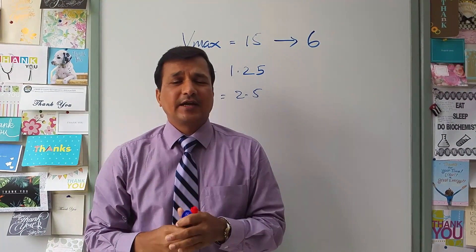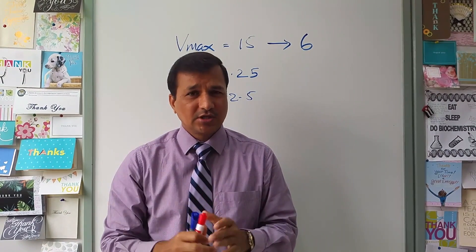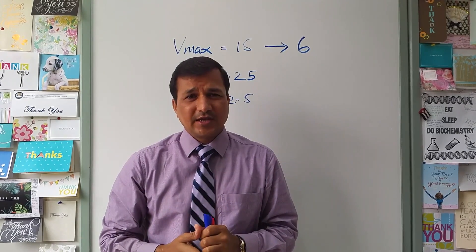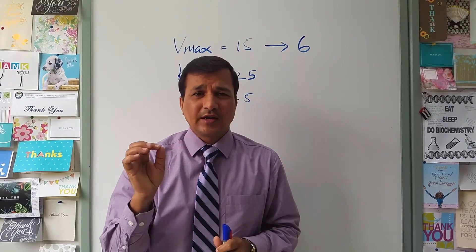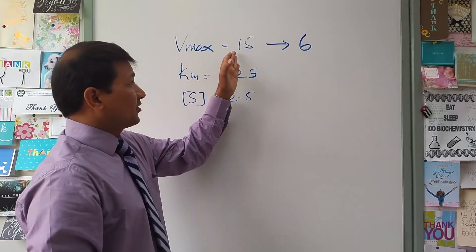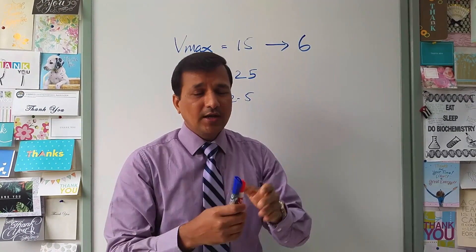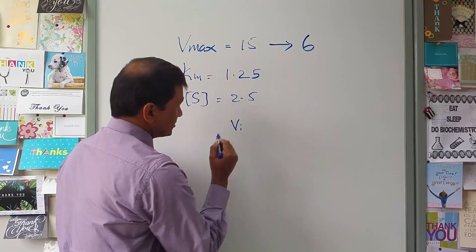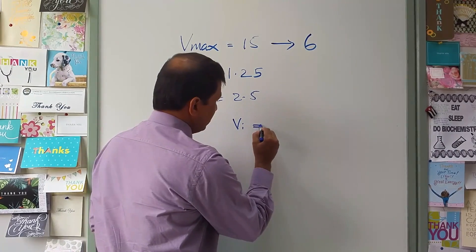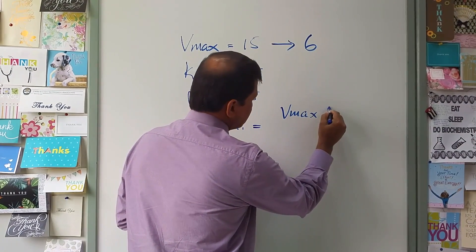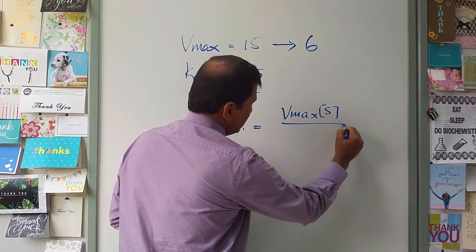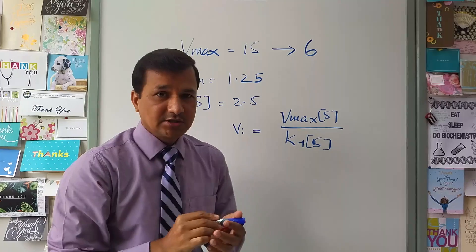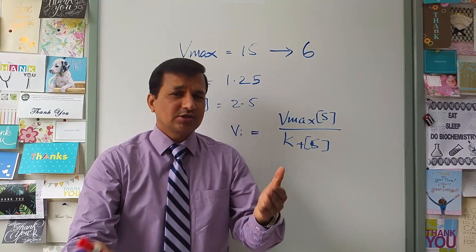Now you have all the values needed to calculate the velocity of the reaction. The question asks for the velocity in the presence of 5 millimolar inhibitor when Vmax dropped from 15 to 6. The Michaelis-Menten equation is: velocity = Vmax × [S] / (Km + [S]).